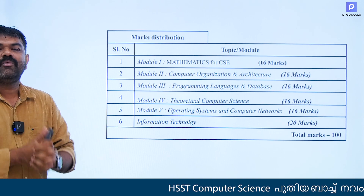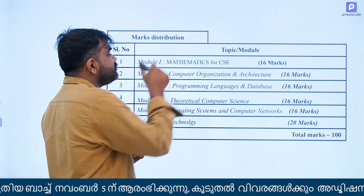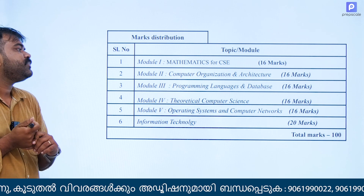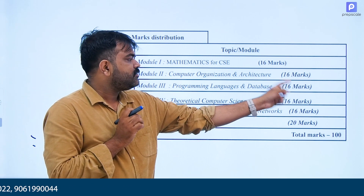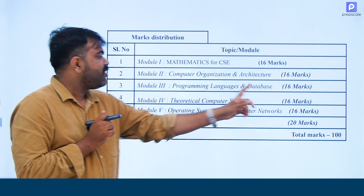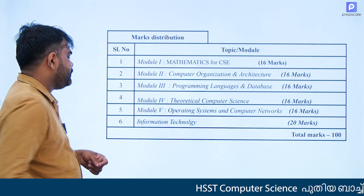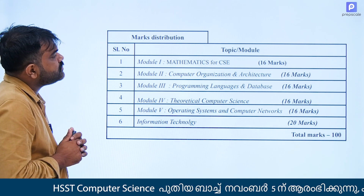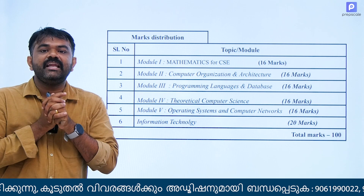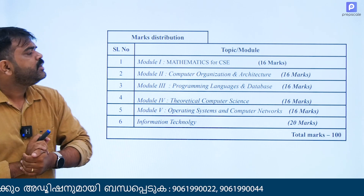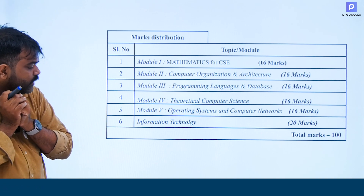If we have a computer science background, we will go to the syllabus outline. We will learn the syllabus outline. We have to get the official syllabus. We have to get the confirmation data from 2-3 months before. If there are no changes, we will see that in the video. This is our syllabus.